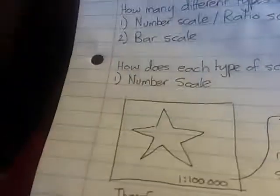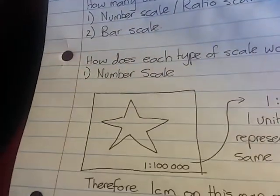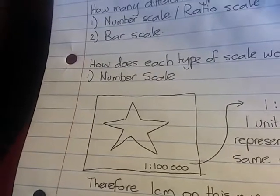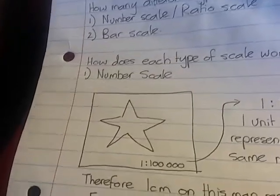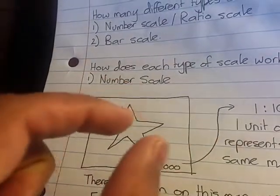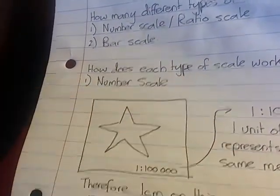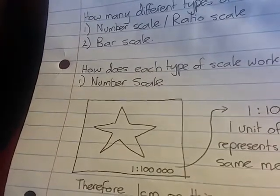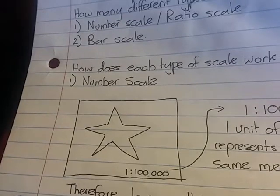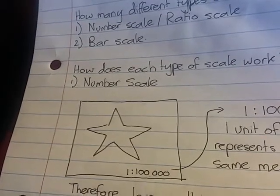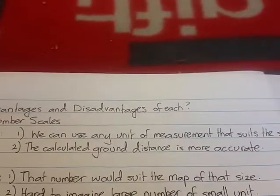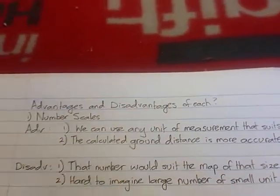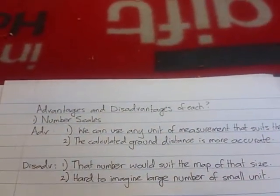What does that mean? Well, if we look back at our star-shaped island with our scale of 1 is to 100,000, that means if I made that map bigger or smaller, I would have to recalibrate the scale. I would need to rework the scale in order to match the new size of the map, and that can be kind of annoying.